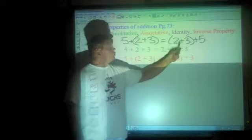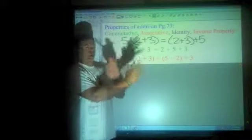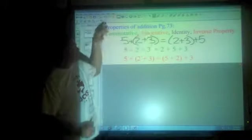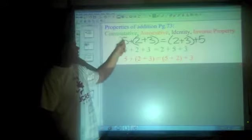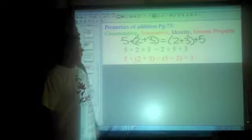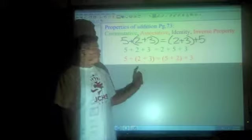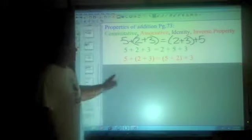5, 2, 3 becomes 2, 3, 5. I switched the order. I just took what was in parentheses and switched it with the 5. That's commutative property, not associative property. The order does not change, but the parentheses do for it to be associative.